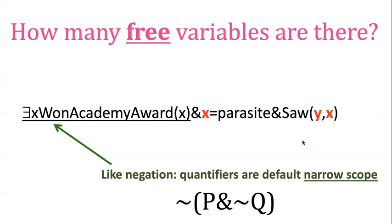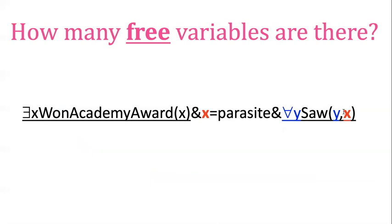But see, the answer to the question is three. There's three free variables because these variables are not inside the scope of any quantifier. And that means that this thing is still semantically incomplete. Remember, variables need quantifiers to give them meaning. So what we need to do is start adding some quantifiers. I'll take care of the Y part first. What this says is everybody saw X. What I'm trying to say is everybody saw Parasite and it won an Academy Award, but I haven't yet succeeded. I've bound the Y now, but look, I've still got two free variables, these two X's.